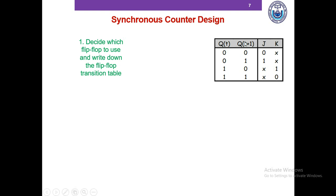Here is the transition table for a JK flip-flop. Q(t) indicates the present state of the flip-flop output, and Q(t+1) indicates the next state of the flip-flop output. On the left side, in the columns of Q(t) and Q(t+1), I've listed all possible combinations of the present state to next state transition.